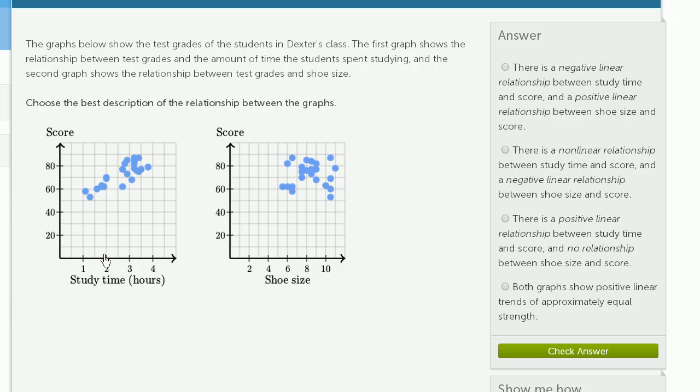So this is study time on this axis, and this is the test grade on this axis. And the second graph shows the relationship between test grades and shoe size. So shoe size on this axis, and then test grade. Choose the best description of the relationship between the graphs.